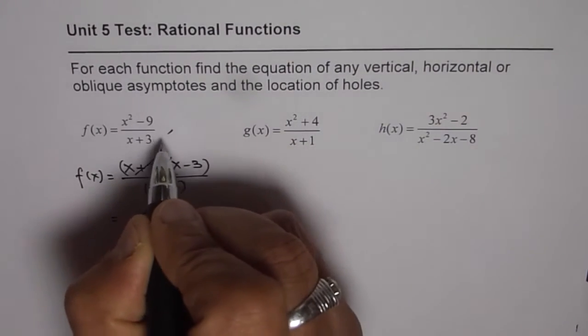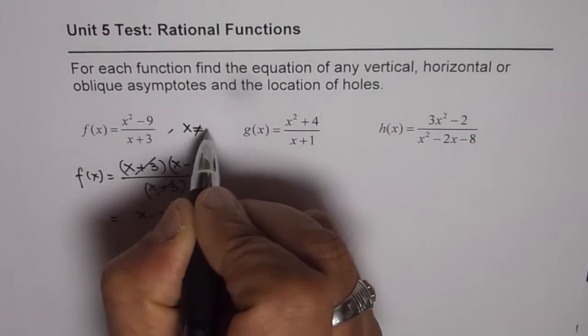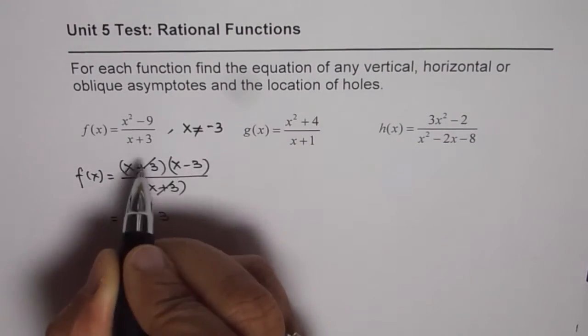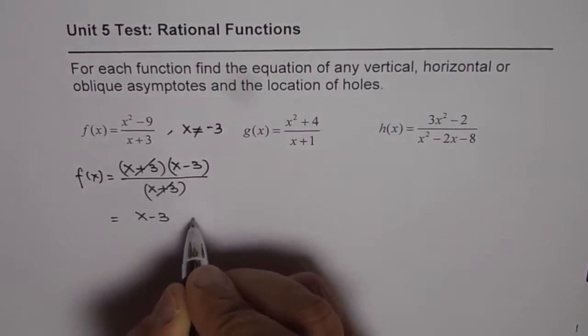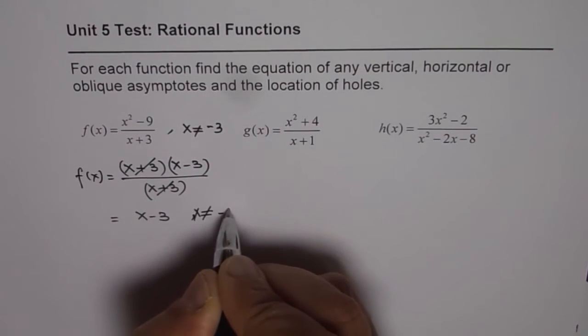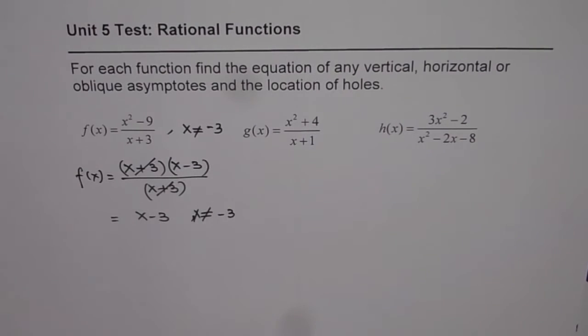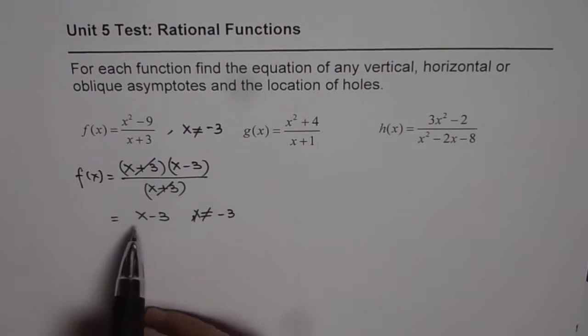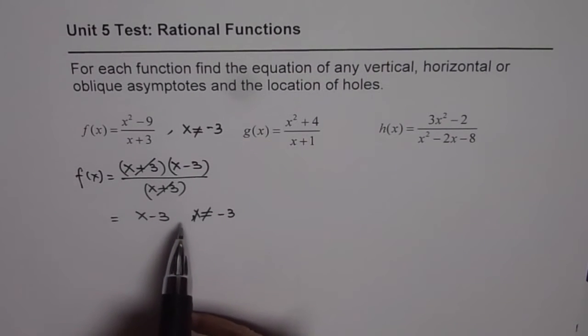Now x plus 3, x plus 3 cancel and so we get x minus 3. Remember, we have a restriction here that is x is not equal to minus 3. That will make the denominator 0. So we have to write it here that x is not equal to minus 3. So when you simplify, you actually get something without any remainder.